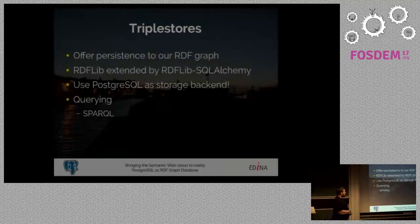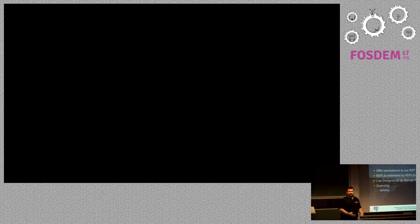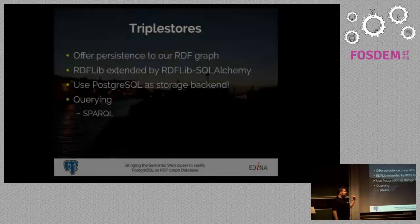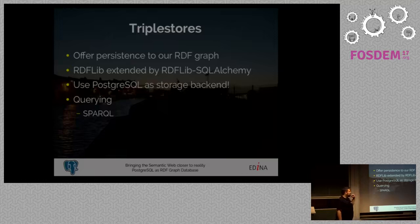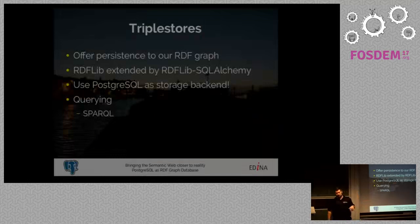To store our triples, we need triple stores, and triple stores are what offer persistence to our graph — a way to put it on disk, index it, and query it. We went down a route that not many people use: we used RDFlib, which is a Python library, and an extension called RDFlib-SQLAlchemy. There used to be an extension that connected RDFlib directly to Postgres, but it's now abandoned, and the author says to use SQLAlchemy instead. So we decided to use Postgres to store all these triples.